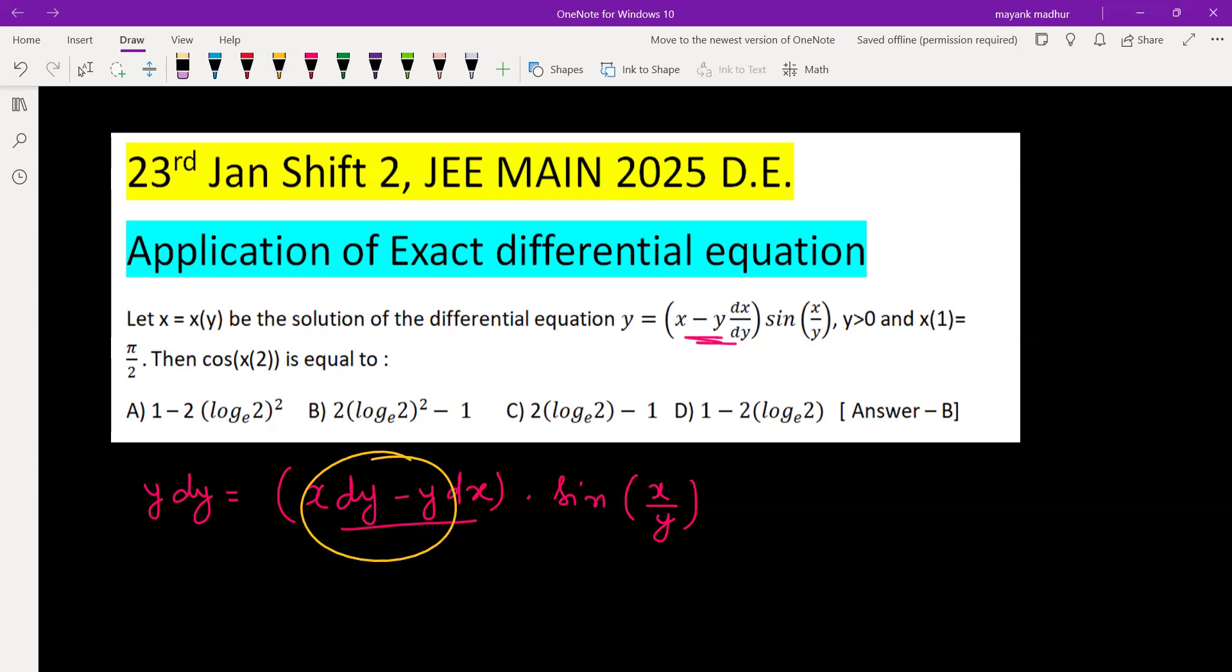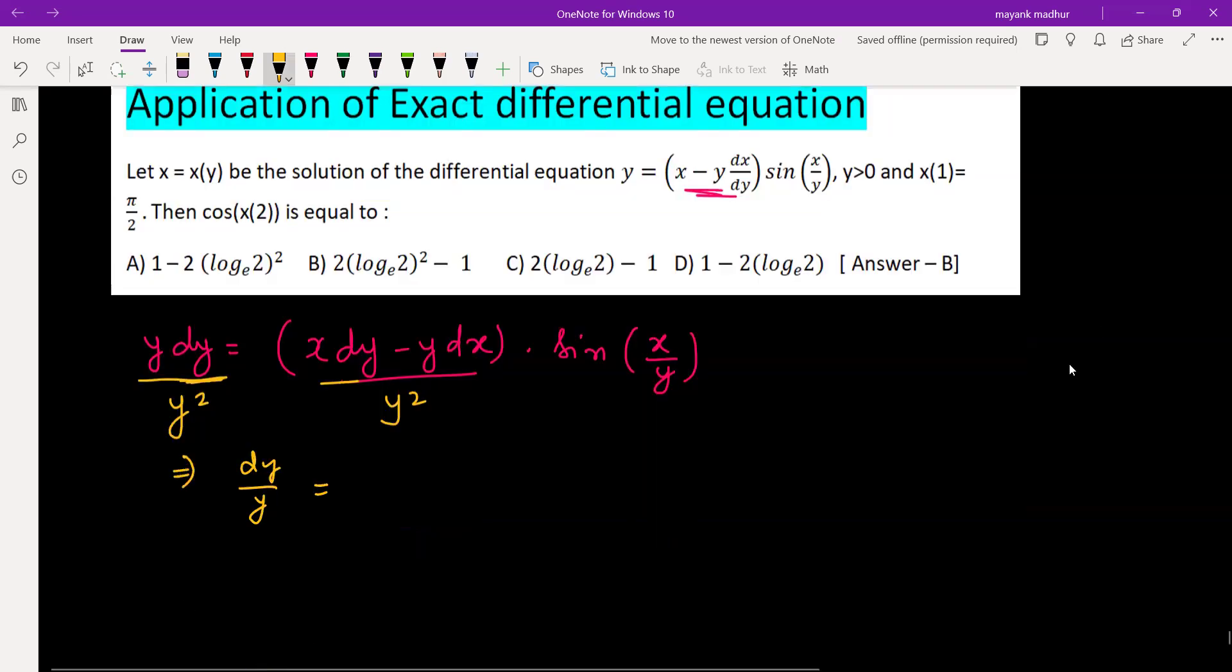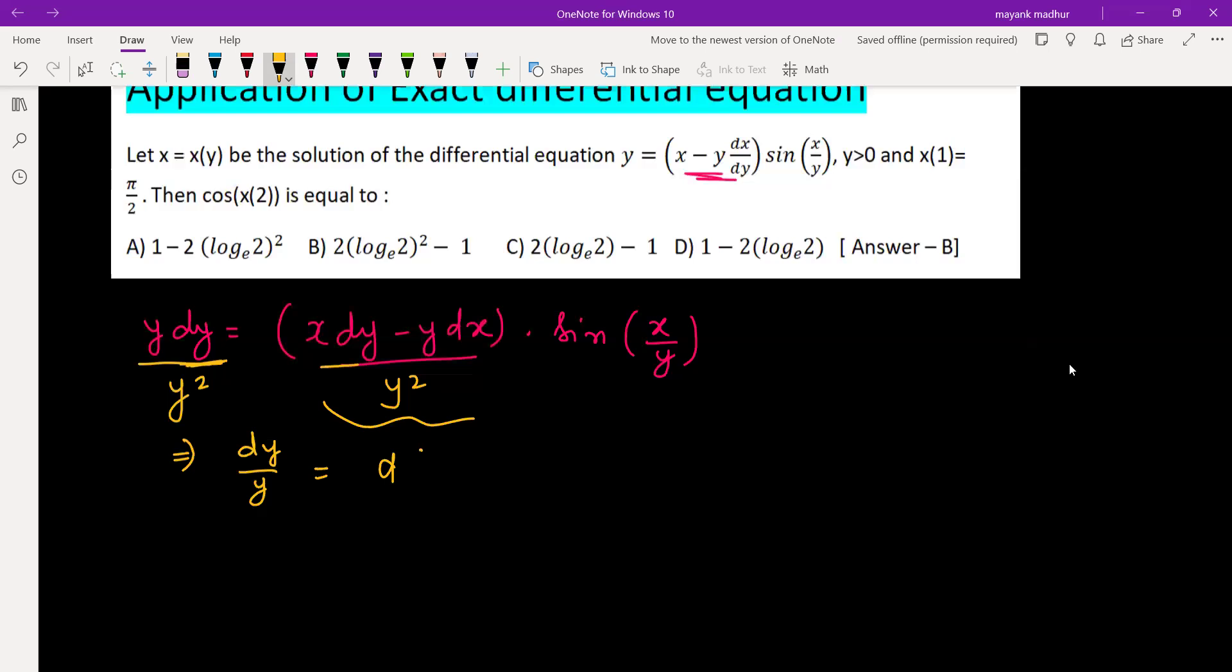When we have this type of term x dy minus y dx, we need to divide by x² or y² in denominator. But keeping right side in mind, if we divide by x², it will be a problem in differentiating. So we'll divide by y² so that gives us LHS is dy/y, RHS is this term which is differentiation of x/y.